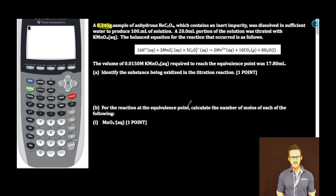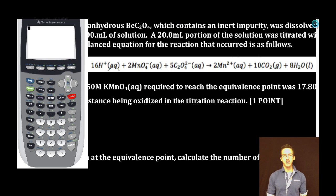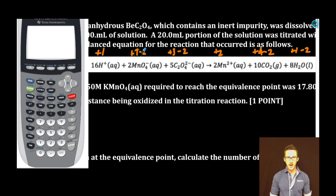Part A. Identify the substance being oxidized in the titration reaction. Let's jump in here and do some oxidation numbers. Hydrogen ion has an oxidation number of plus one. Oxygen is minus two, which means the manganese is plus seven. In oxalate, the oxygen is minus two, carbon is plus three. Manganese two plus is plus two. Carbon dioxide has oxygen minus two, carbon plus four. Water has oxygen minus two, hydrogen plus one. Let's compare. Manganese starts with an oxidation number of plus seven, finishes as plus two, which means it's been reduced. Carbon goes from plus three to plus four, which means it's been oxidized.